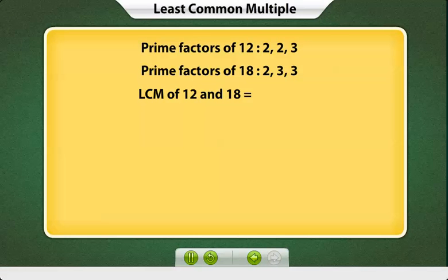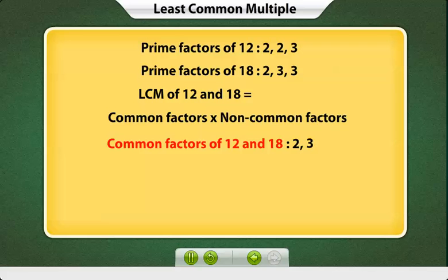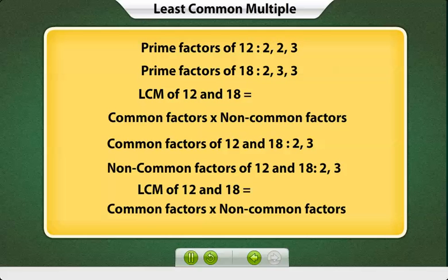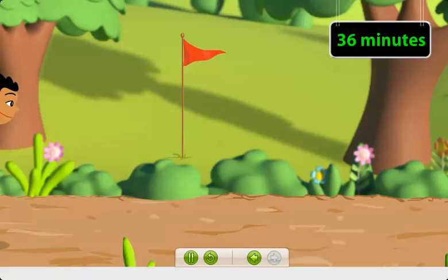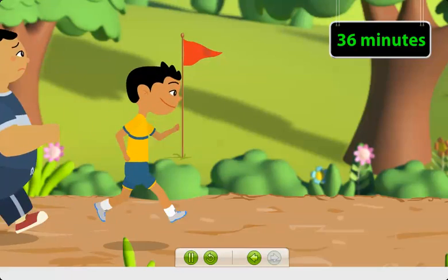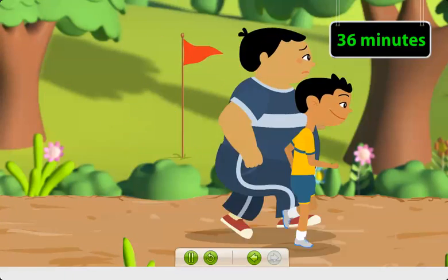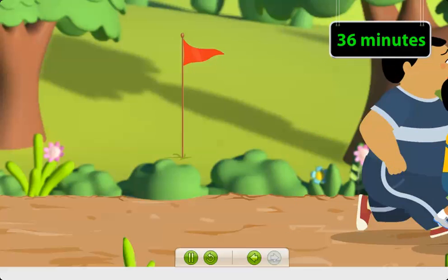The least common multiple of 12 and 18 is the product of their common and non-common factors. We know that the common factors are 2 and 3, and the non-common factors are also 2 and 3. So, the LCM is 36. That means, Jiggy and Pasha will meet at the starting point again after 36 minutes.